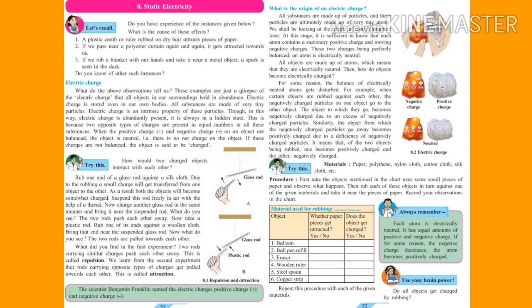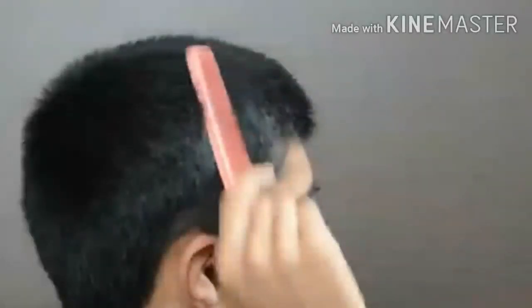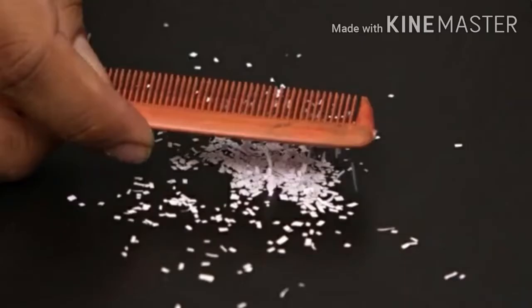Hello, good morning students. Today we are going to start a new lesson, that is lesson number eight: static electricity. To understand static electricity we'll see some activities. When we rub a comb on our dry hair and then bring that comb near pieces of paper, what will happen?